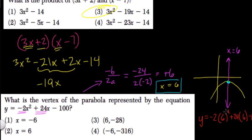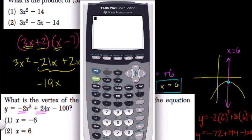So 6 squared is 36 times negative 2 is negative 72. 24 times 6, that's 144, so plus 144, minus 100. So this is what y equals. So we can solve this quickly on our graphing calculator.